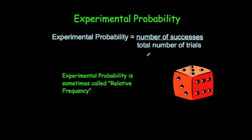However, obviously the more times you do this, the more reliable it will become. So the experimental probability is the number of successes over the number of trials. Sometimes this is called relative frequency, so quite often in exams you'll see relative frequency and it means exactly the same thing.